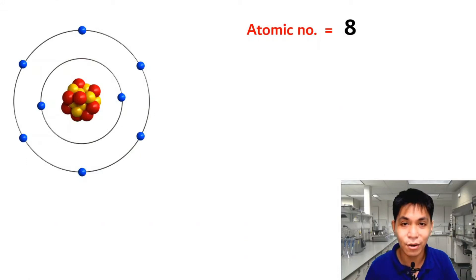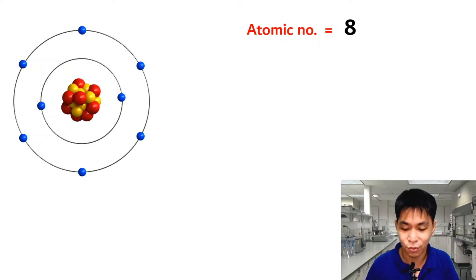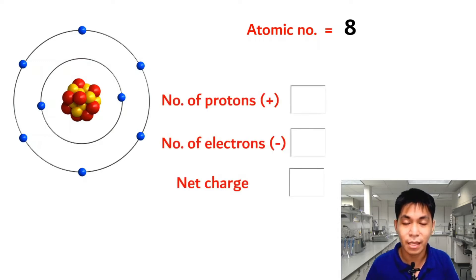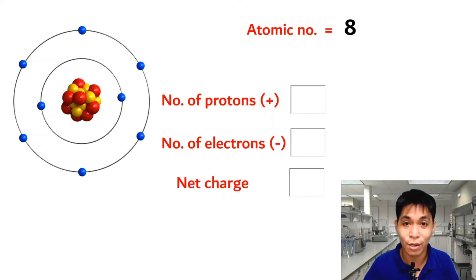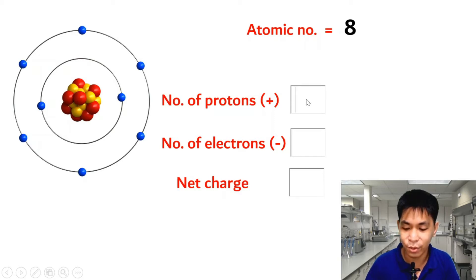The atomic number of an atom can tell us important details about the atom. For example, if our atom has an atomic number of 8, the number of protons is the same as the atomic number — meaning the number of protons is equal to 8.